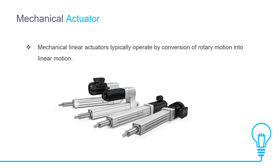Mechanical actuators create movement by converting one kind of motion, such as rotary motion, into another kind, such as linear motion — for example, a rack and pinion. Another example is a chain block hoisting a weight, where the mechanical motion of the chain is used to lift a load. The functioning of mechanical actuators relies on combinations of structural components such as gears and rails, or pulleys and chains. High reliability, simplicity of utilization, easier maintenance, and greater precision of positioning are some of the advantages.